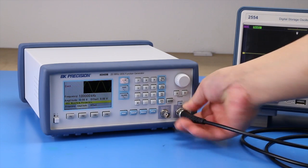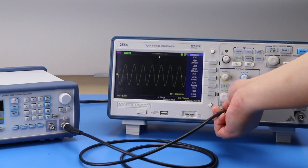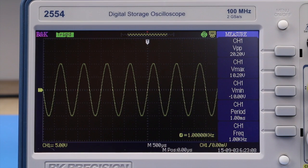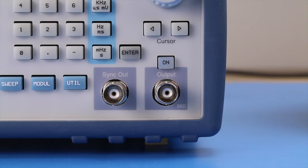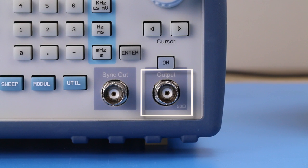When inputting the signal using coaxial cable into an oscilloscope, the oscilloscope displays 20 volts.